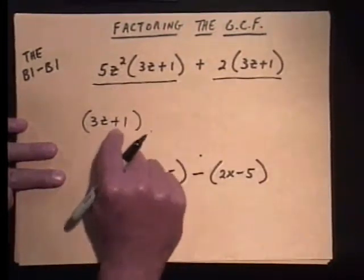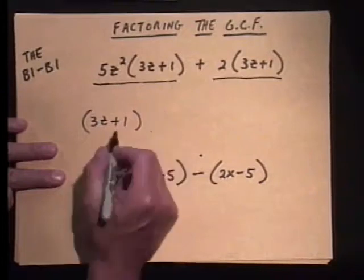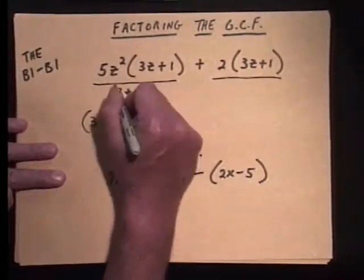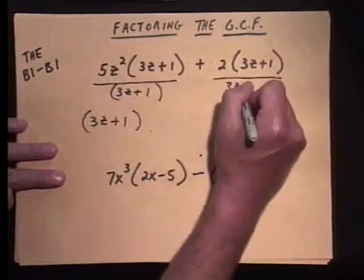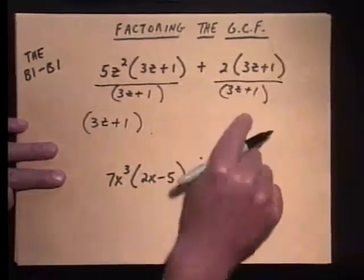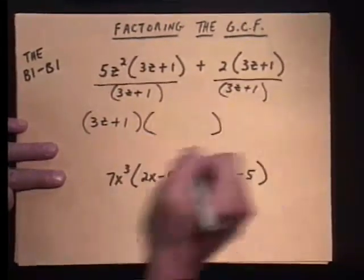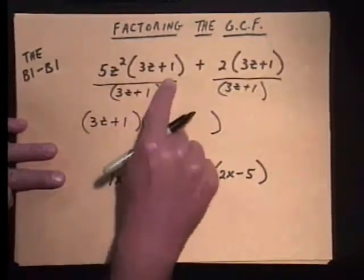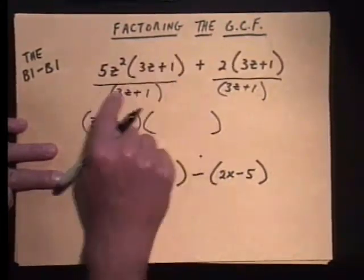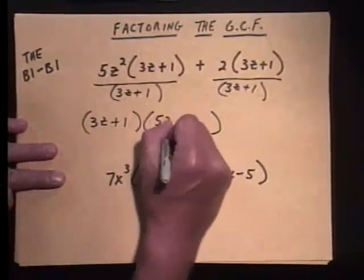So, one 3z plus 1 comes out. And if you want to, just like we did in the previous lesson, you can write that greatest common factor right underneath each one, and then put what's left in here. So, what's left, it doesn't take a lot to see either. Those cancel out, leaving you with the 5z squared.